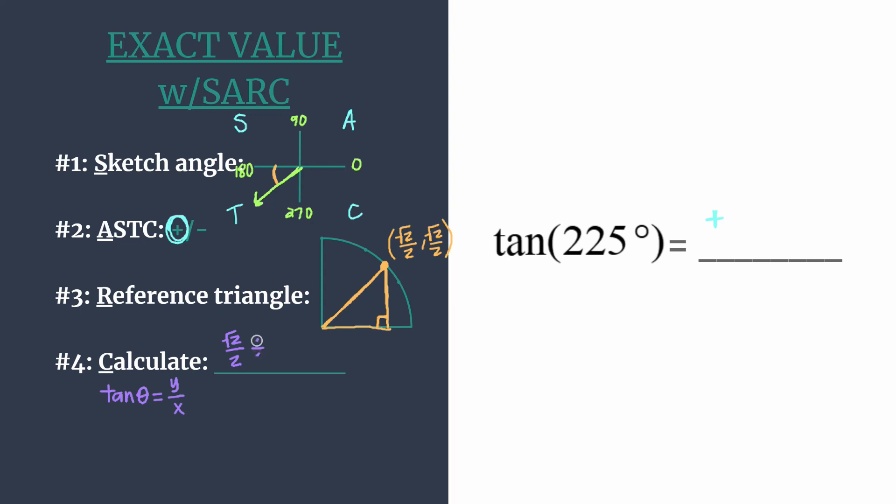Because you can see in this calculation we're simply taking square root of 2 over 2 and dividing it by square root of 2 over 2. So any number divided by itself of course is 1. In step 2 we already decided our final answer should be positive and so the tangent of 225 degrees is positive 1.